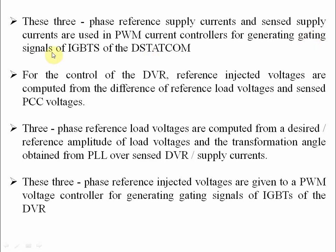For the control of the DVR, the reference injected voltages are computed from the difference of the reference load voltage and the sensed PCC voltage. The three-phase reference load voltages are computed from the desired reference amplitude of load voltage and the transformation angle obtained from the PLL over the sensed DVR supply currents. These three-phase reference injected voltages are given to the PWM voltage controller for generating the gating signals for the IGBTs of the DVR.